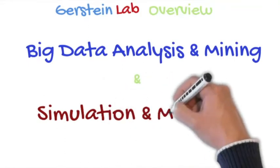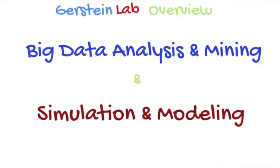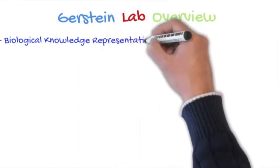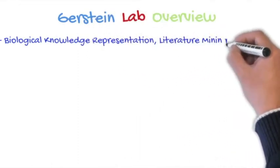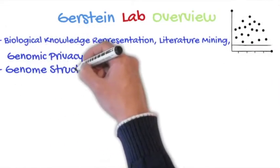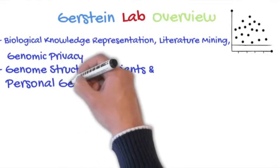On the big data analysis side, we do a lot of work in biological knowledge representation, literature and text mining, privacy, particularly genomic privacy. And then moving down the spectrum, we do work in personal genomics, looking at genomic variants, particularly structural variants.